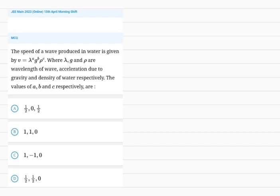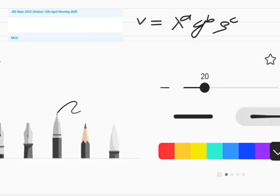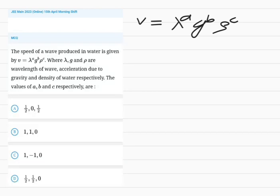So we will do that. V equals lambda to the power a, G to the power B, and Rho to the power C. To solve this question, you need to remember the dimensional formula of each quantity. So velocity's dimensional formula...